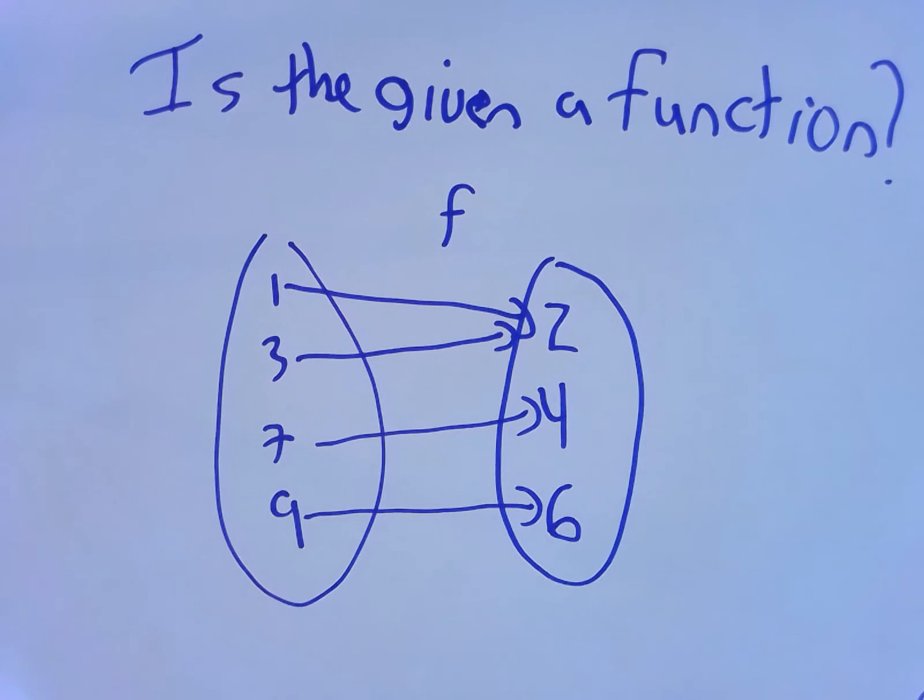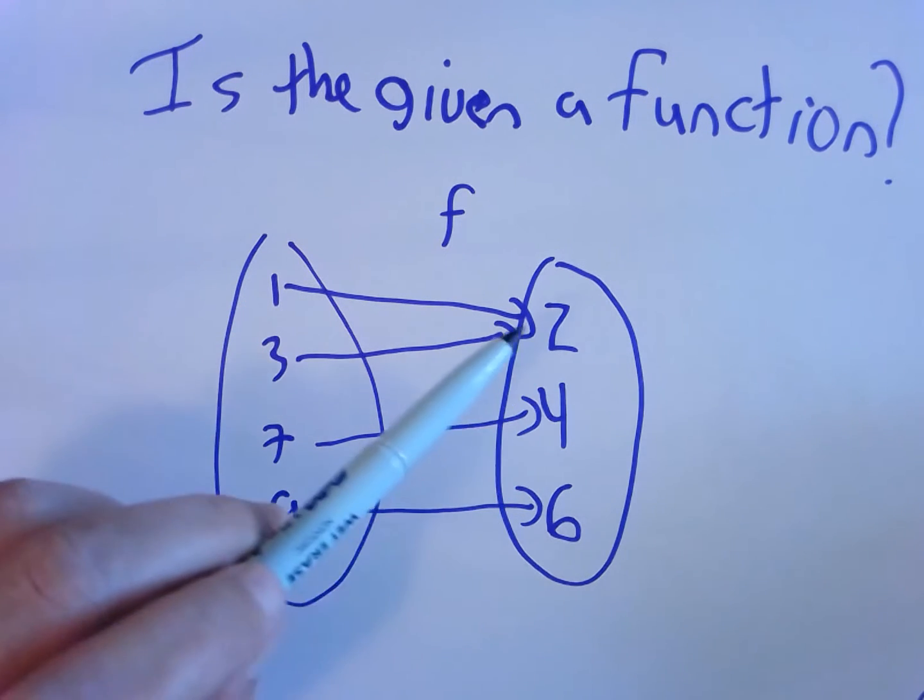Okay, here we are talking about whether or not we have a function. Somebody will hand us a relation and ask, is it a function? So for example, here we have this relation f. The question is, does every input have exactly one output?